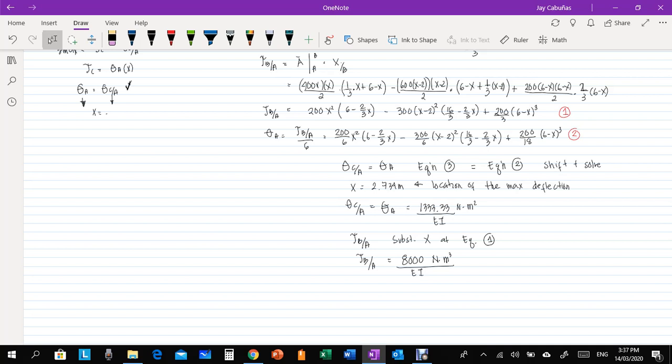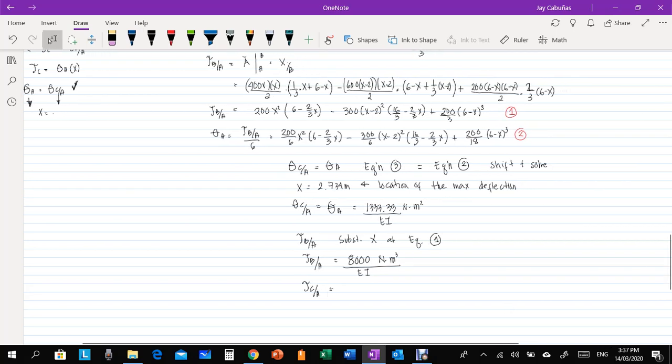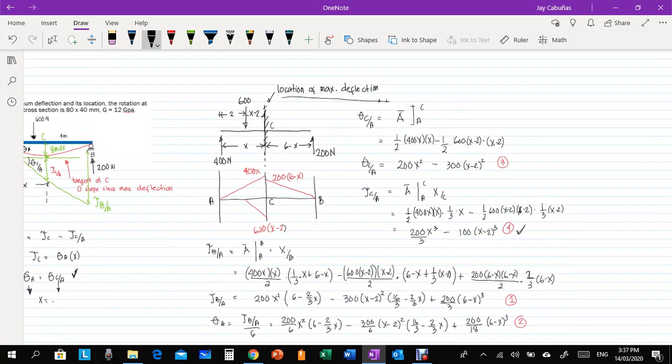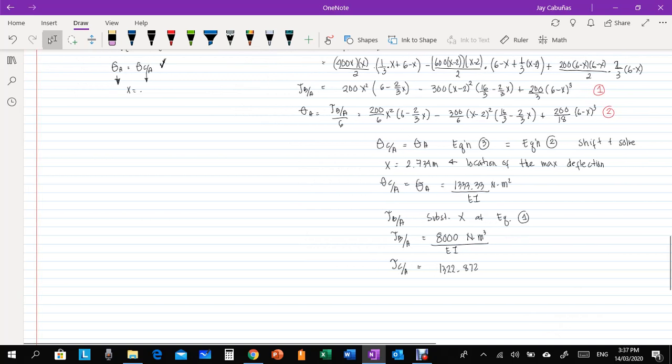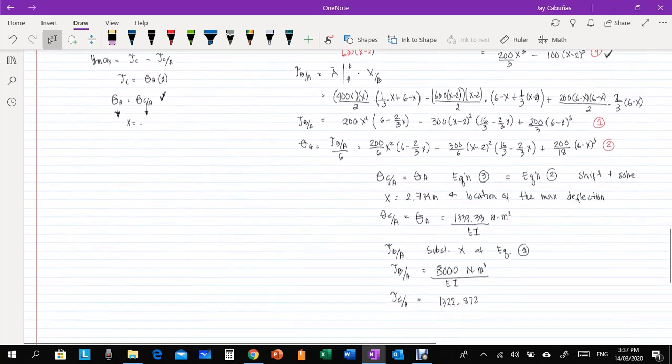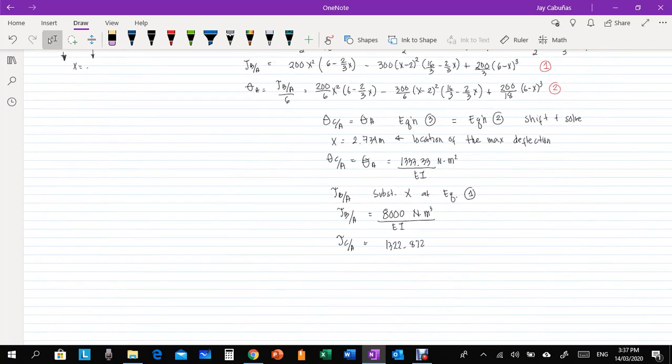Okay, so, how about deflection CA? Deflection CA, substitute X, substitute X in equation number 4, substitute X there. Okay, so, we have the answer for this is 322.872. Okay, so, we can now compute, do we have value of Y? So, we can now compute TBA, so, TBA is the answer. However, we need to compute EI. We compute EI, the same as we did last time.